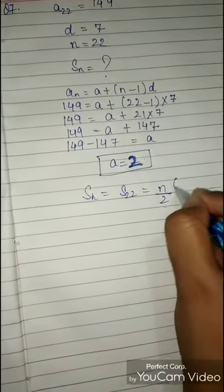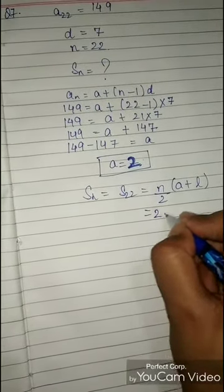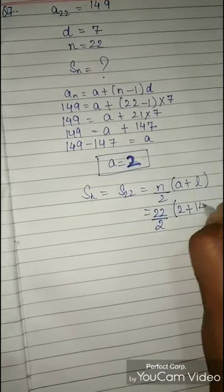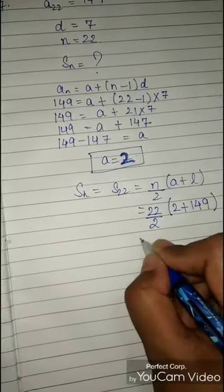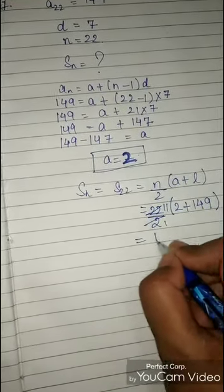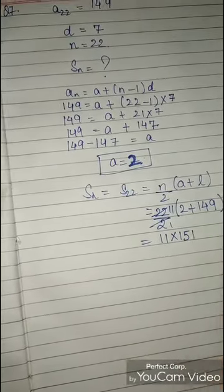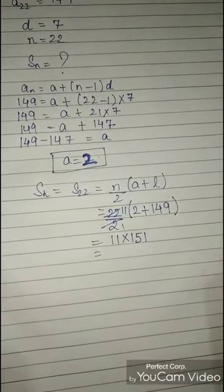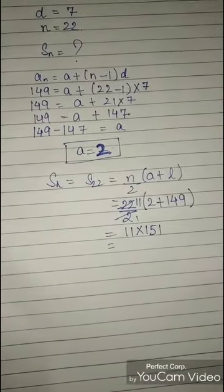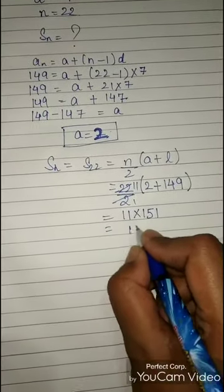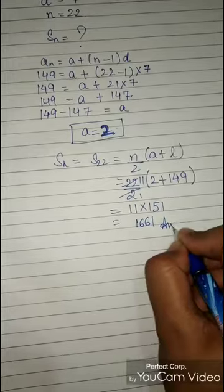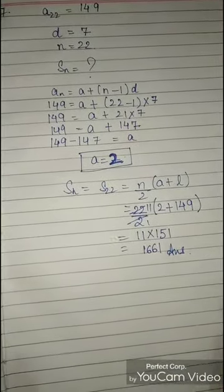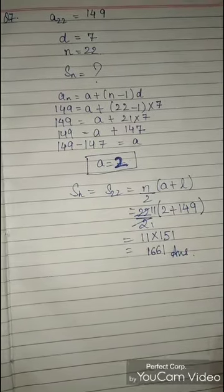Now finding S22 using Sn = n/2 × (a + l): S22 = 22/2 × (2 + 149) = 11 × 151 = 1661. So the sum of 22 terms of the AP is 1661.